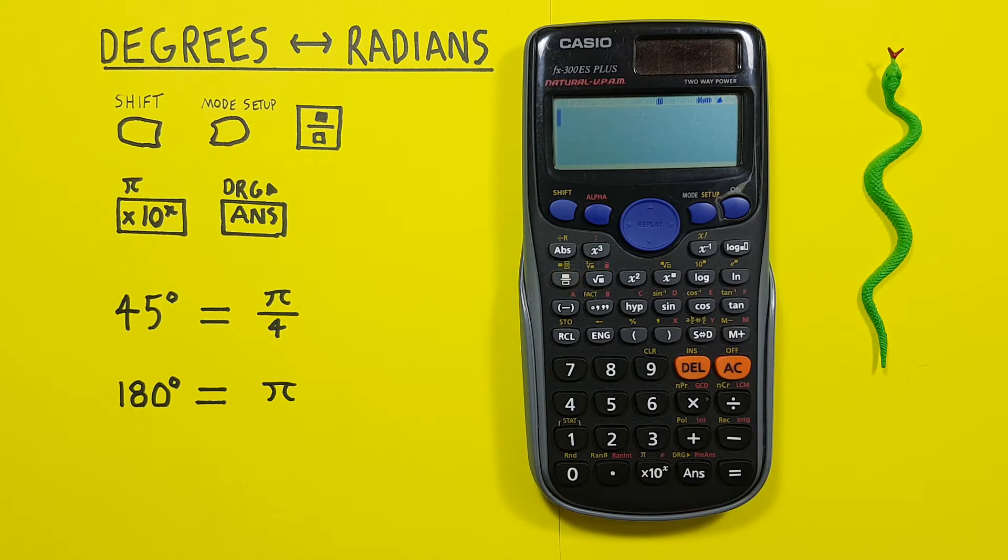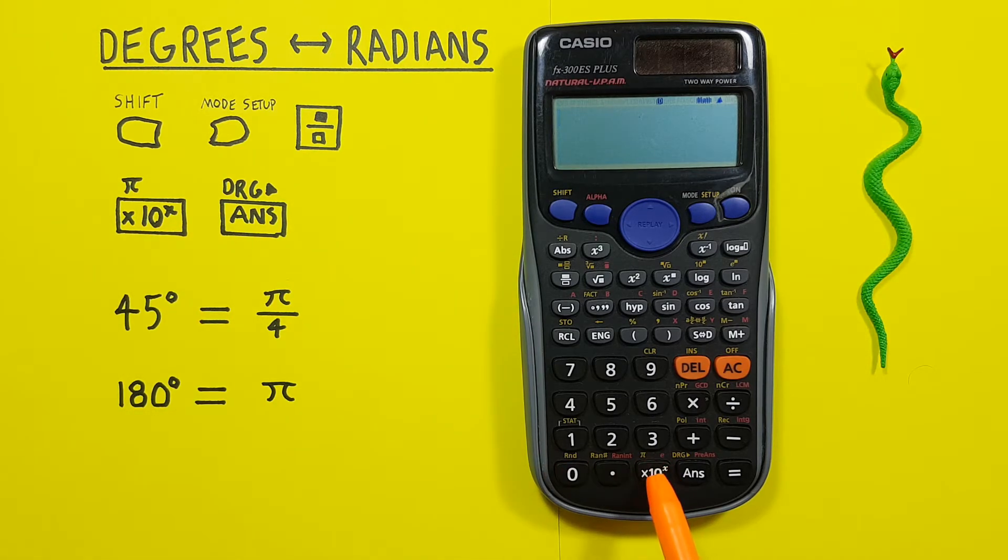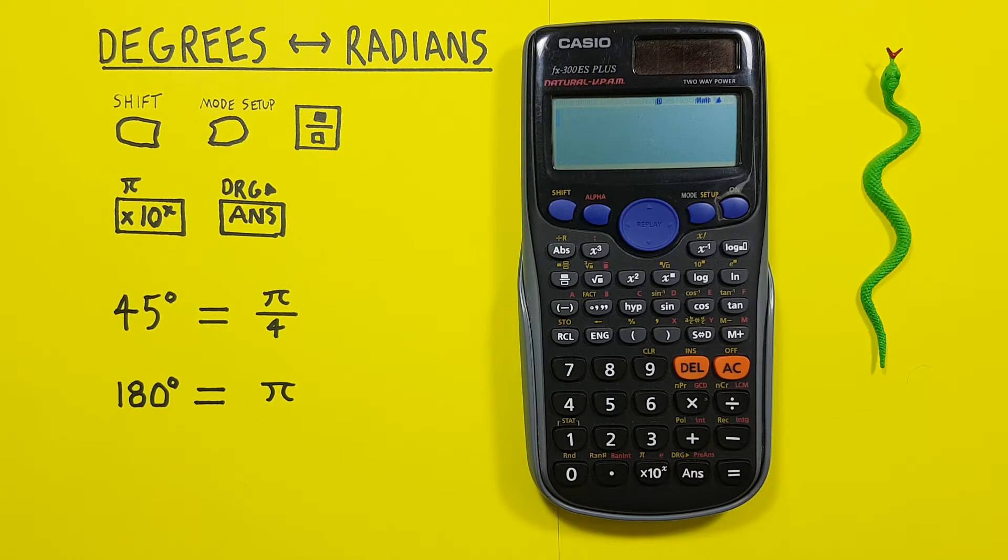The Times 10 to the X key with the Shift function of pi that looks like this, located here. And the Answer key with the Shift function of drg that looks like this, located here.